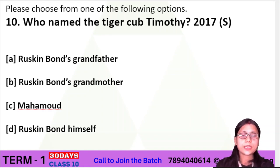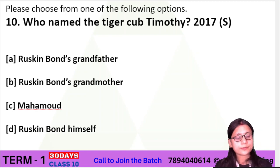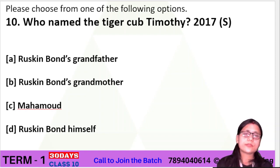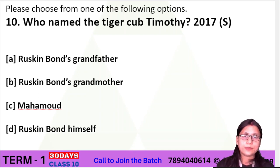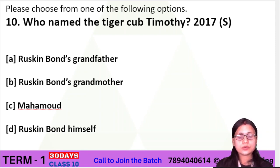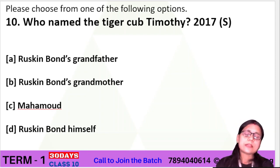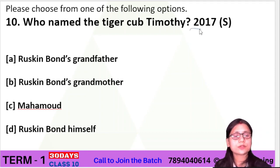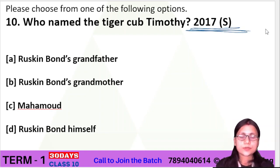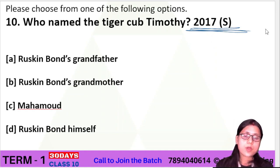Question number 10: 'Who named the tiger cub Timothy?' When grandfather found Timothy from the roots of a tree, he took him home. After that, who named the tiger cub Timothy? The four options are: Ruskin Bond's grandmother, Ruskin Bond's grandfather, Muhammad, or Ruskin Bond himself.